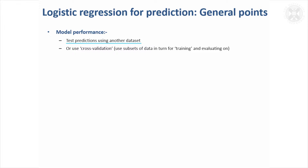you would want to test your predictions either using another data set or to use something that's become known as cross-validation, where you take out subsets of the data in turn and then you train your model on one part of the data set and test it on the other part of the data set, so you get a fairer assessment of how well the model is likely to do if you were to use it on a separate data set.